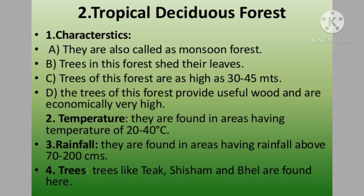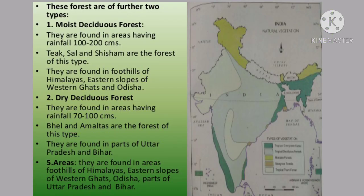The tropical deciduous forests are also called monsoon forests. These are found in areas which receive rainfall between 70 cm to 200 cm, and they are of two types: moist and dry deciduous. The moist deciduous forests are found in areas where 100 to 200 cm rainfall occurs. These areas are the foothills of the Himalayas, eastern slopes of Western Ghats, and Odisha. The trees are teak, saal, sesham, sandalwood, amla, kusum, and mahua.